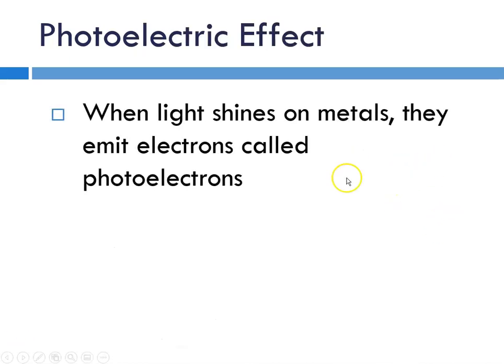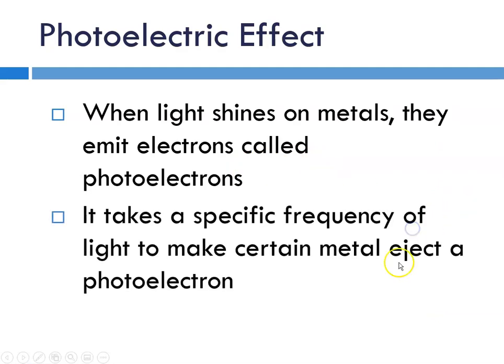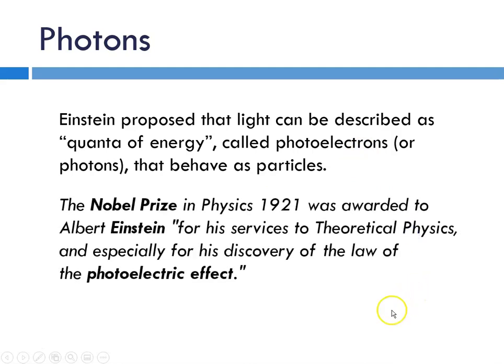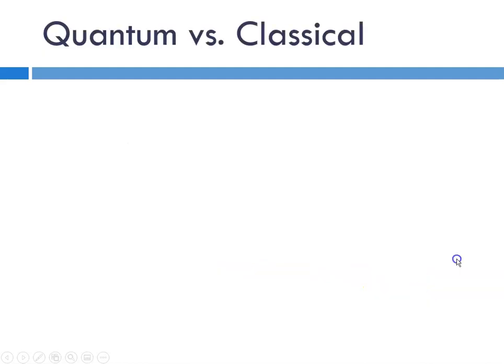When light shines on metals, they emit electrons that we're calling photoelectrons. It takes this specific frequency of light to make a metal eject a photoelectron. Einstein proposed that light can be described as a quantum of energy or plural quanta of energy made up of these photoelectrons that behave as little particles. The Nobel Prize in physics in 1921 was awarded to Albert Einstein for his services to theoretical physics and especially for his discovery of the law of the photoelectric effect. Most people don't realize that the Nobel Prize that Einstein won was for explaining the photoelectric effect, not for general relativity.